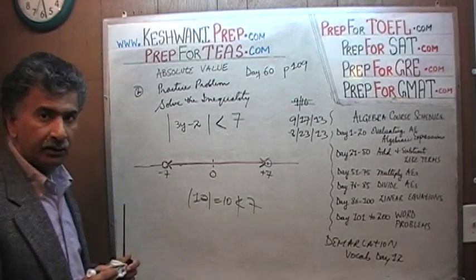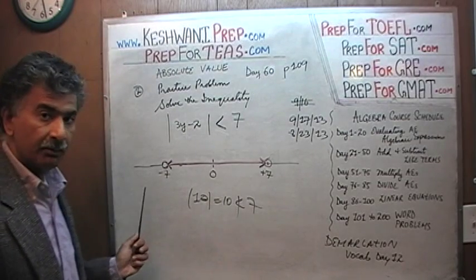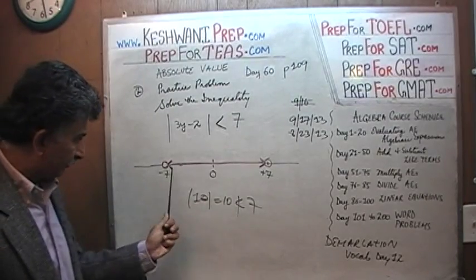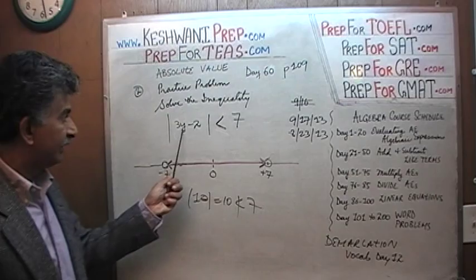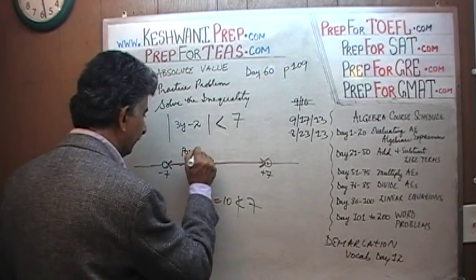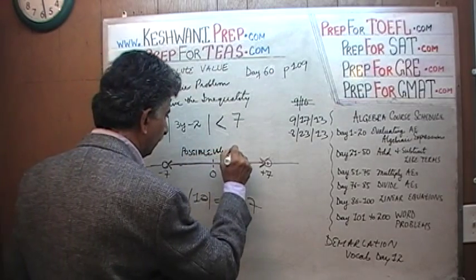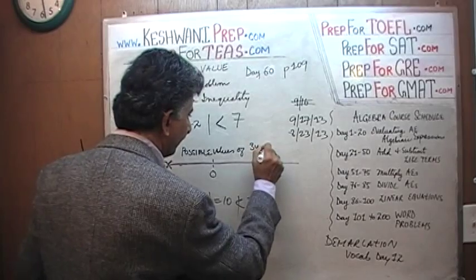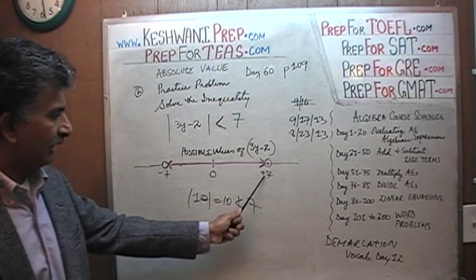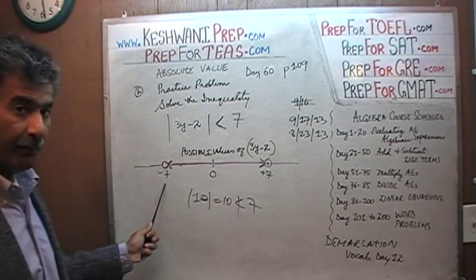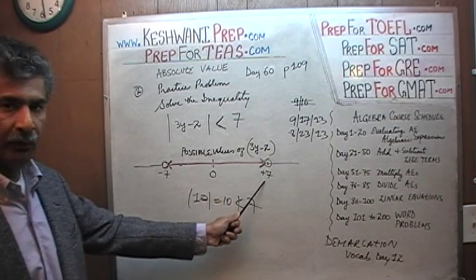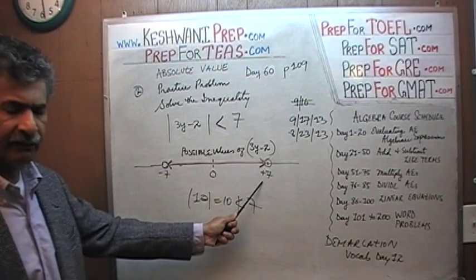What we are now showing on the number line are not the values of x, but rather the possible values of 3y minus 2. This solution from here to here shows the possible values of 3y minus 2 — in other words, 3y minus 2 can be as low as up to negative 7 (not including −7), and 3y minus 2 can assume a value as high as 6.9999.